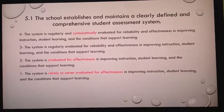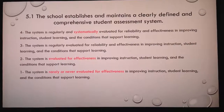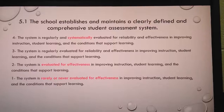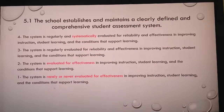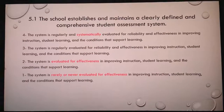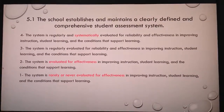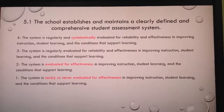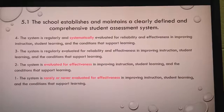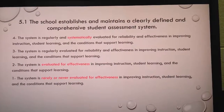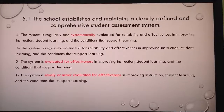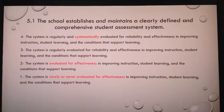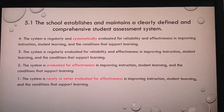Standard 5.1 states that the school establishes and maintains a clearly defined and comprehensive student assessment system. To receive a 4, the system is regularly and systematically evaluated for reliability and effectiveness in improving instruction, student learning, and the conditions that support learning — an area where technology clearly fits. A 2 drops 'systematically,' and a 1 means the system is rarely or never evaluated for effectiveness.